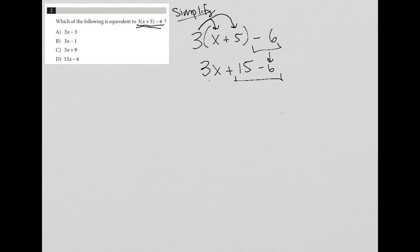Combine like terms here. I bring down the 3x. 15 minus 6 is 9, positive 9. So this becomes 3x plus 9.